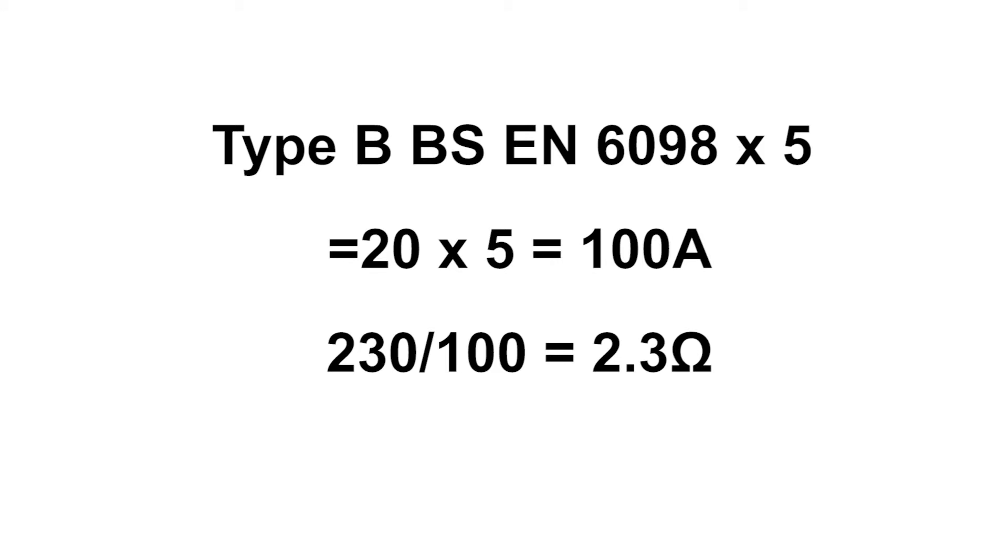We're using a 20 amp device. So if we multiply that by five, it means that when 100 amps flows through it, it must operate within 0.1 of a second. Clearly for 100 amps to flow, if I just use Ohm's law, 230 which is my voltage divided by 100 tells me that I've got a value of resistance of a maximum of 2.3.